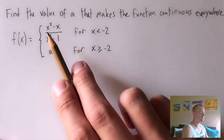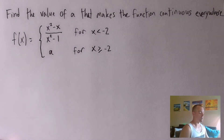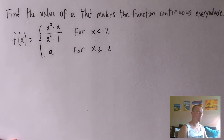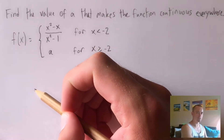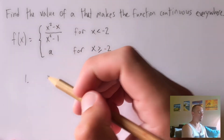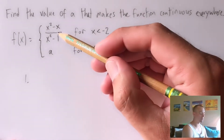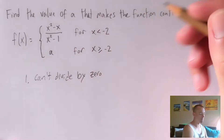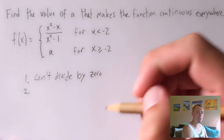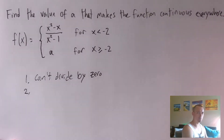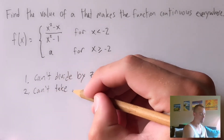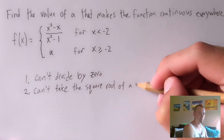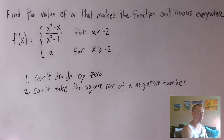Now let's look at X squared minus X all over X squared minus one. To confirm if a function is continuous everywhere, think about what X values could break the rules of math. There are typically three main things: you can never divide by zero, so whenever you see a fraction, make sure the denominator is not zero. Another common problem is taking the square root or any even root of a negative number — you can take the square root of zero, but not of a negative. And third, you can't take the log or natural log of zero or a negative.